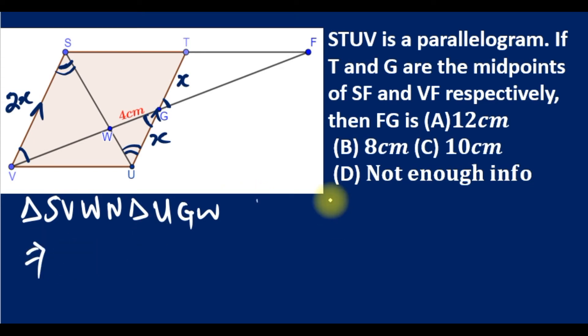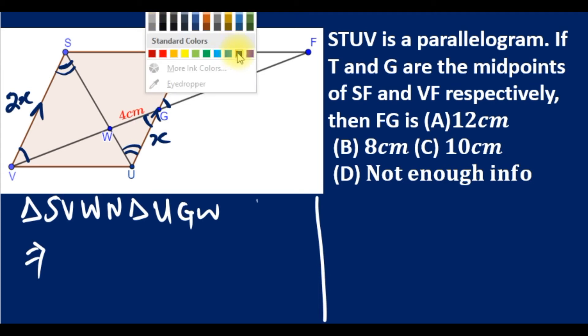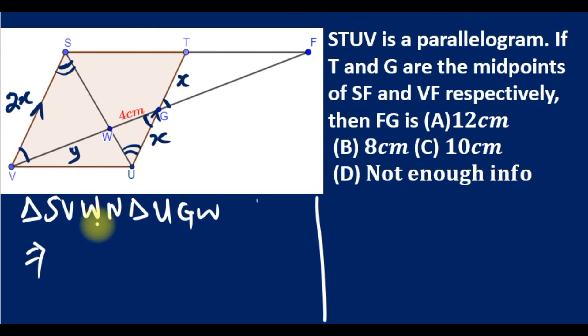Let's call VW as y. Using the similar triangle theorem, we see that y of the big triangle corresponds to 4, that's WG of the small triangle. So y over 4 equals 2x over x.